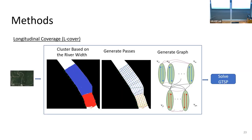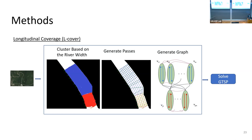From an application perspective, this longitudinal coverage method is applicable when you have side-scan sonar, because it minimizes the number of turns when running the coverage. However, we also have river environments where we can probably extract more information from the intrinsic properties of the river.